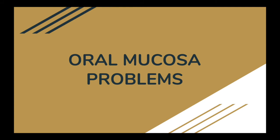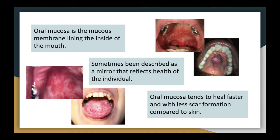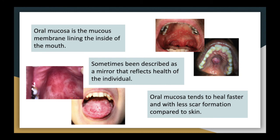Now, let's move on to oral mucosa problems, the second part of this presentation. The oral mucosa is the mucous membrane lining the inside of the mouth. It comprises stratified squamous epithelium, termed oral epithelium, and an underlying connective tissue, termed lamina propria. The oral cavity has sometimes been described as a mirror that reflects the health of the individual. Changes indicative of disease are seen as alterations in the oral mucosa, which can reveal systemic conditions such as diabetes or vitamin deficiency, or the local effects of chronic tobacco or alcohol use. The oral mucosa tends to heal faster and with less scar formation compared to skin, though the underlying mechanism remains unknown, with research suggesting extracellular vesicles may be involved.